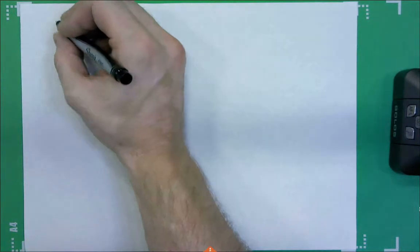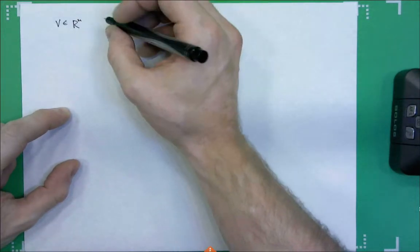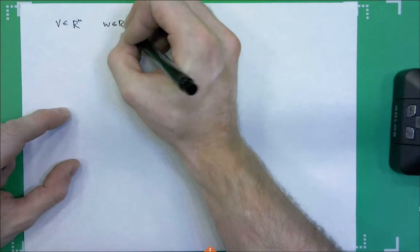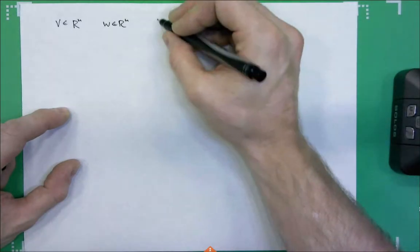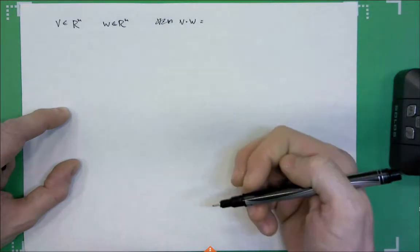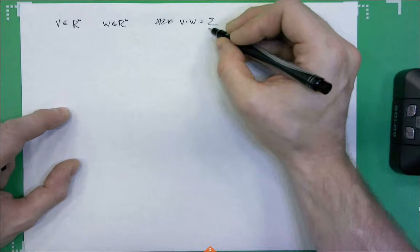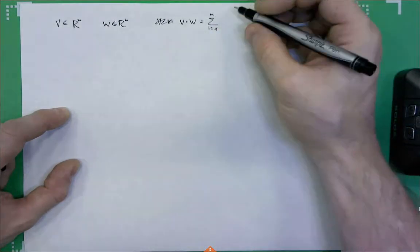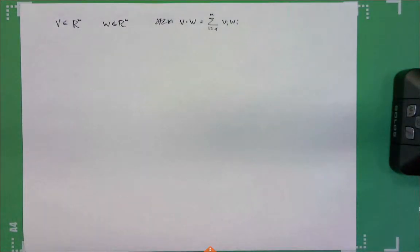The last time we talked about the inner product — about vectors. So if I have one vector v from R^n, which is an n-dimensional vector space over the reals, and I have another vector w from R^n, then what was the dot product of the two? I denote it as v dot w, and by definition it's the sum from 1 to n of all the components: v_i times w_i. That's the inner product, or dot product, or scalar product — one of the simplest things in linear algebra.